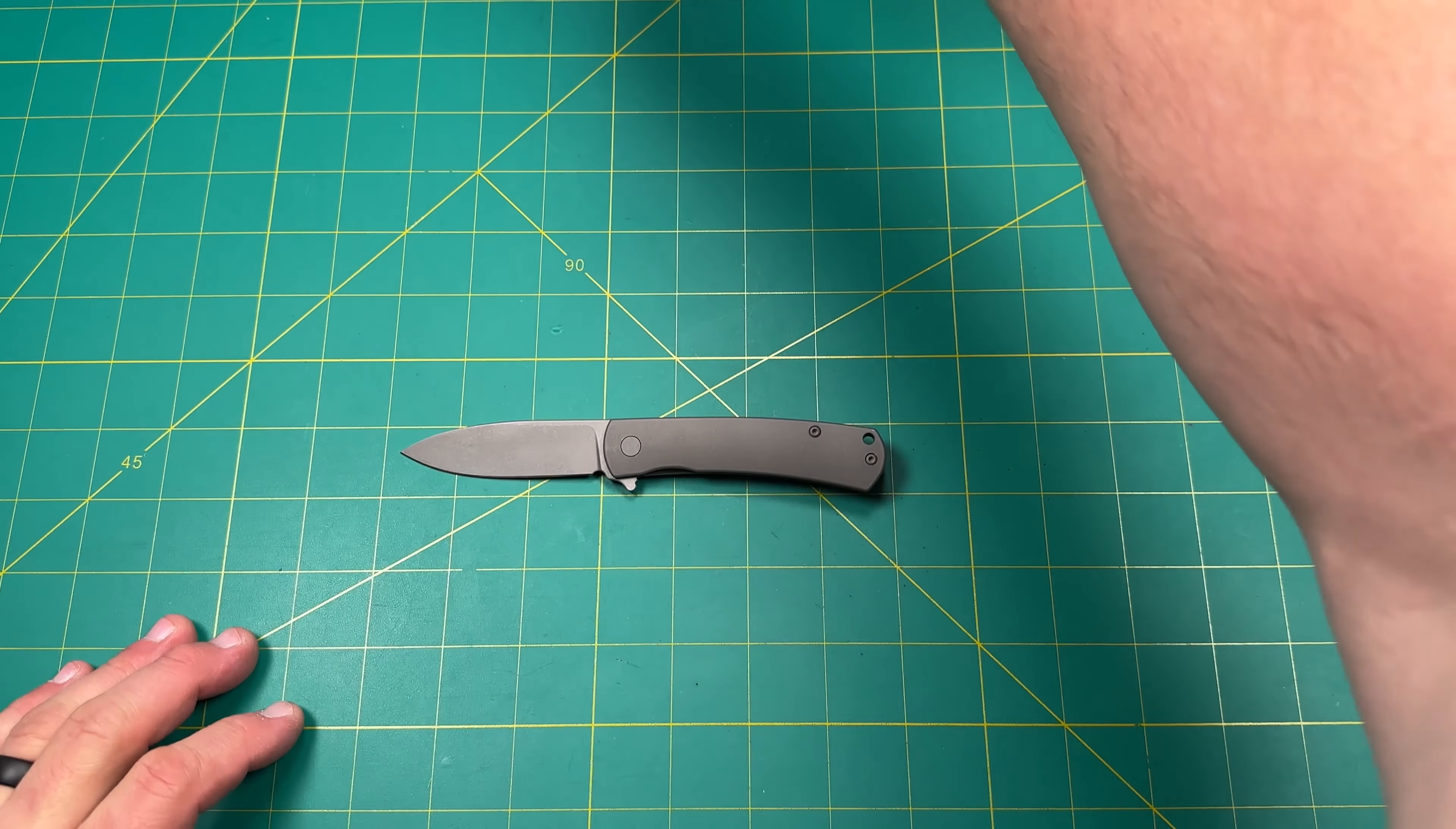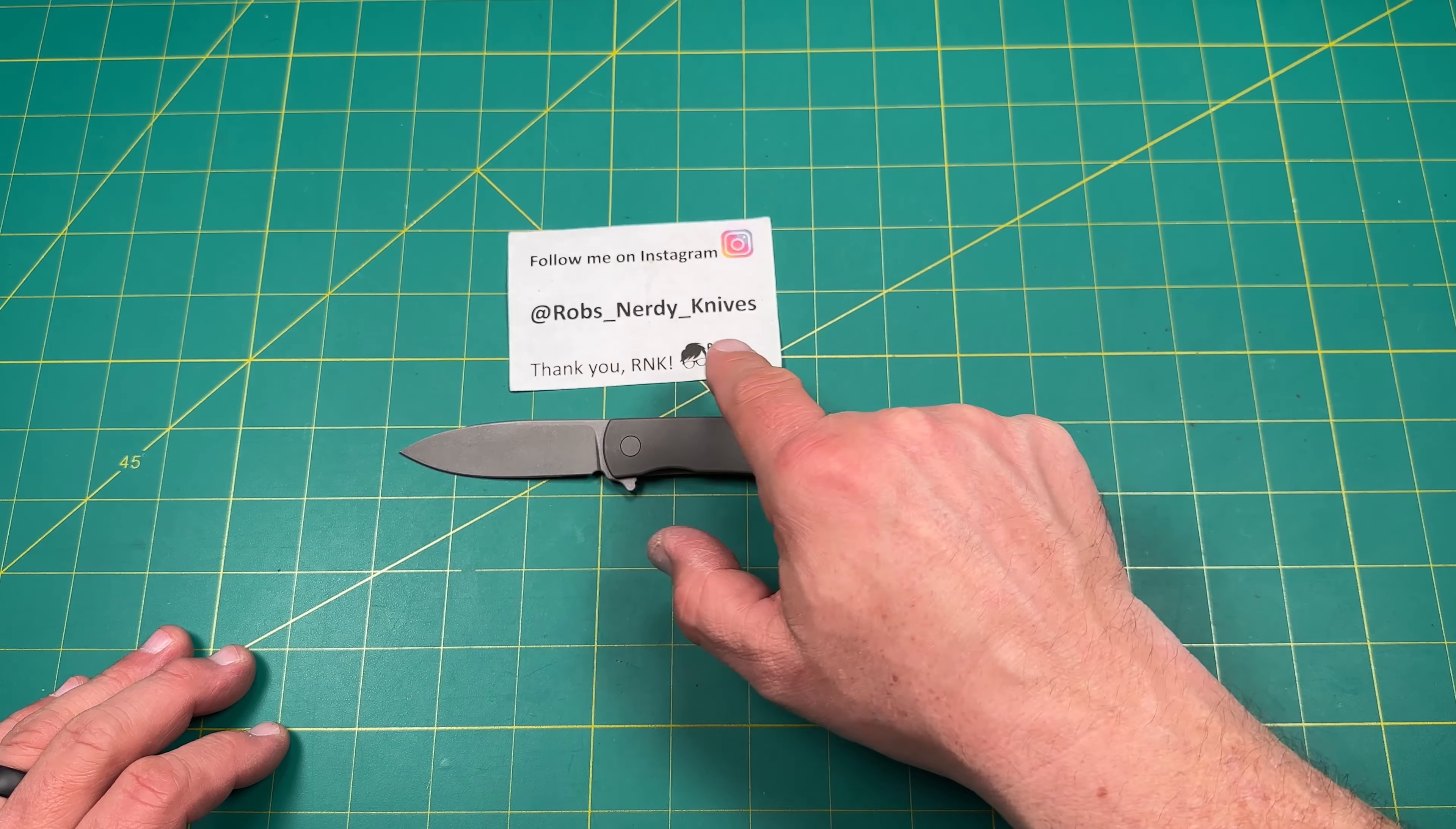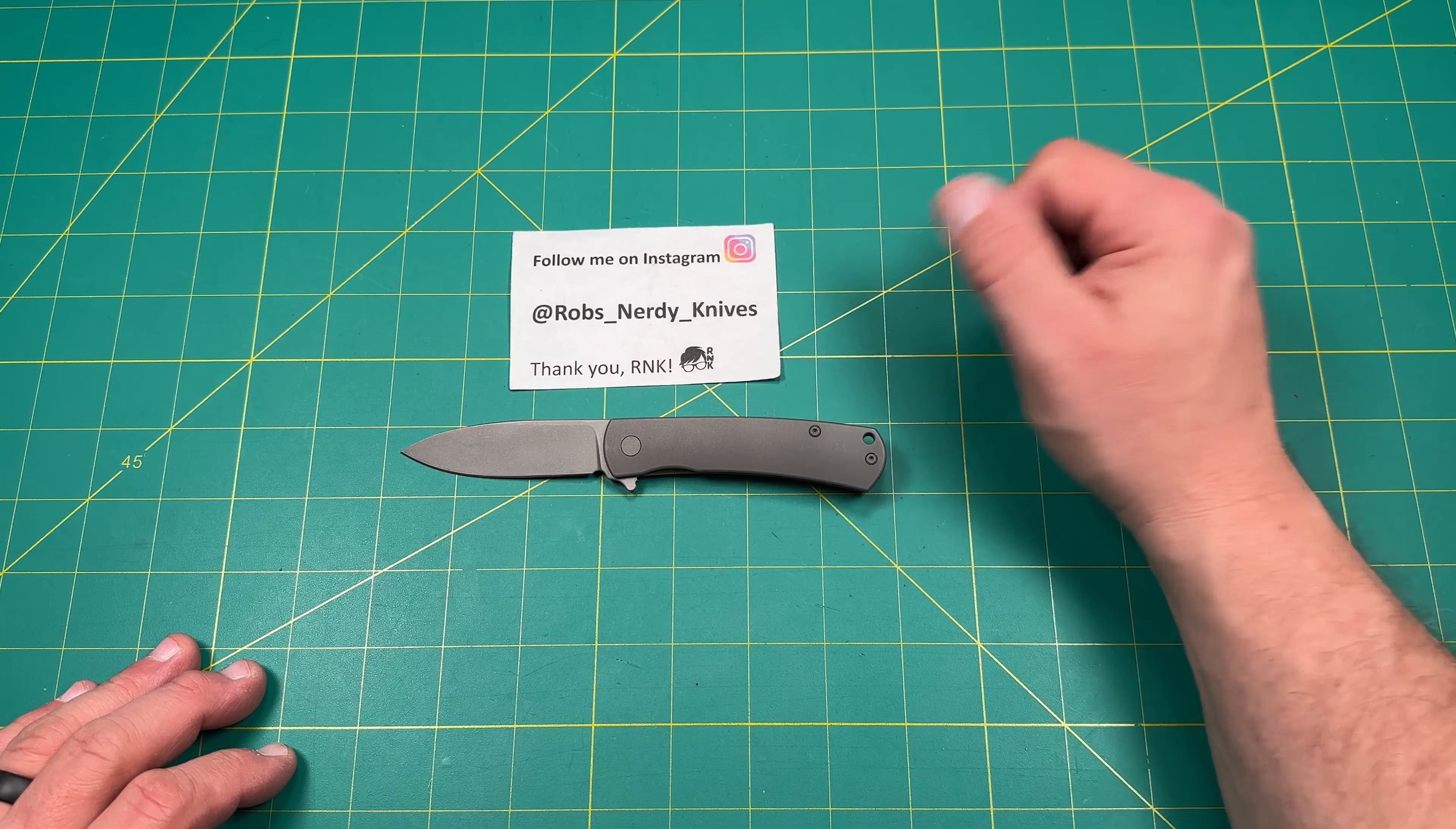And if you've done all that, maybe, hey, go check me out over on Instagram at Rob's underscore nerdy underscore knives. Again, that's on Instagram at Rob's underscore nerdy underscore knives. Thanks so much for watching today. Have a great day and a great week. Bye.